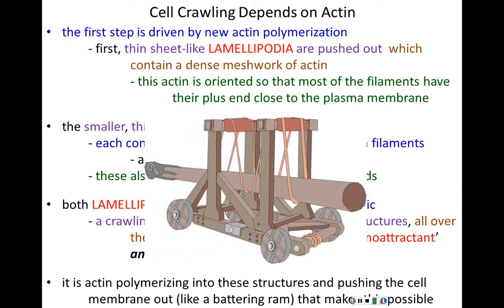These lamellipodia and filopodia, made solely of actin, anchor onto the crawlable surface in the direction the chemoattractant is coming from. It is actin polymerizing and stabilizing into these cellular structures that literally forcibly pushes the cell membrane out — denting it outward towards the chemoattractant like a battering ram — pushing it towards the chemoattractant and dragging the rest of the cell with it.